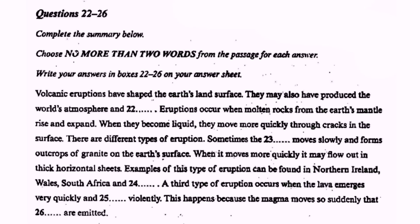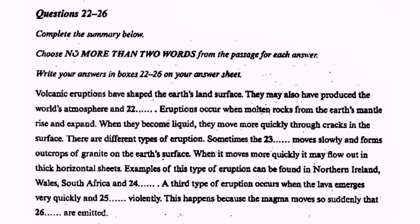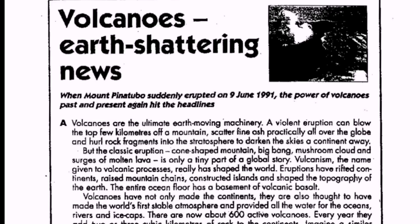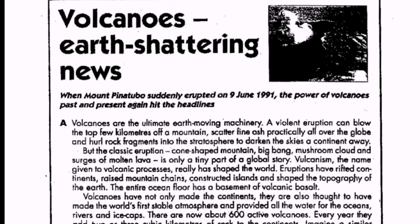Let's start today's test. Questions 22 to 26: complete the summary below. Choose no more than two words from the passage for each answer — you can write one word or two words but not three words. Write your answers in boxes 22 to 26. Before we start, we should read the title of the passage, which is 'Volcanoes: Earth's Shattering News,' meaning this passage is about volcanoes, magma, lava, gases, and how volcanoes shatter the earth.